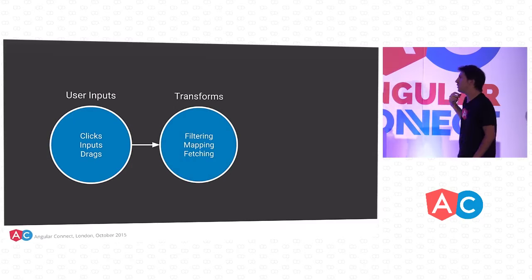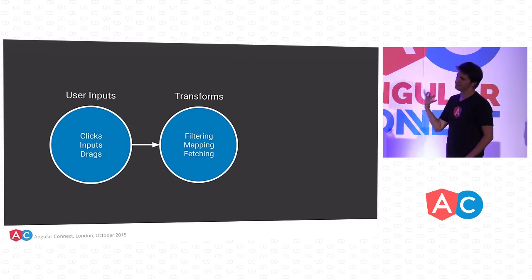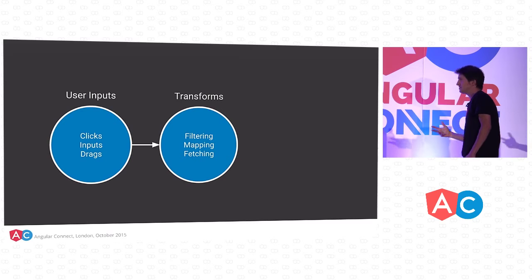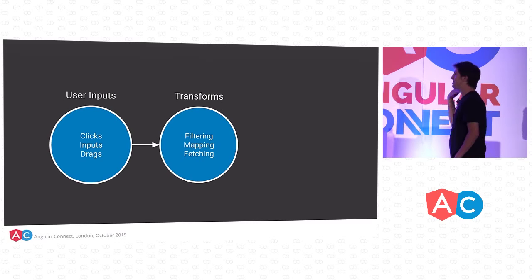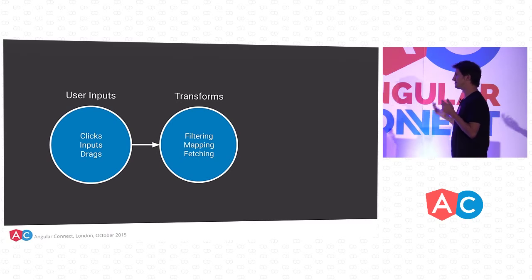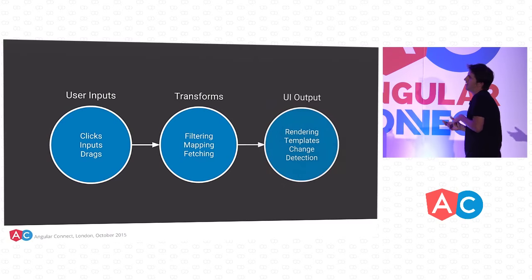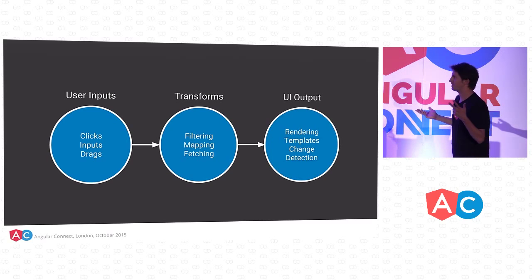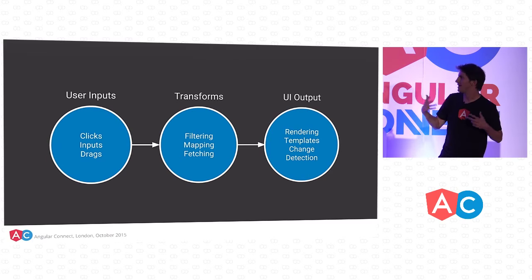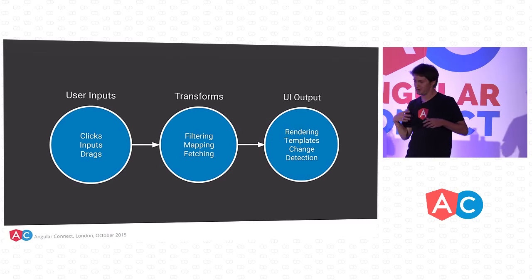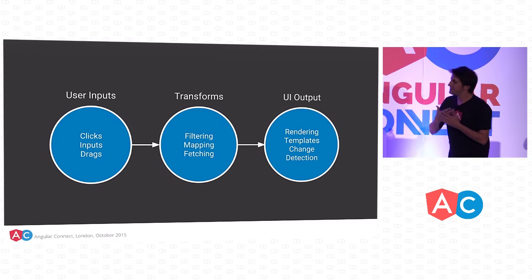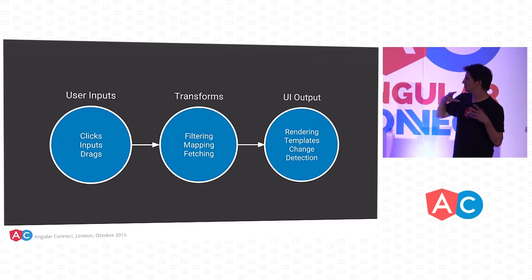The way we think about this is: you take those inputs and transform them into something. That might mean filtering them, doing a map, or translating a click into a request to get data from the server. And then the third step, like every other web application, is doing something with that data — we'll probably render it, throw it in a template.